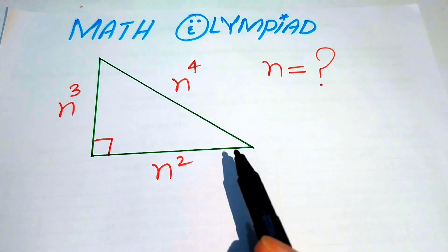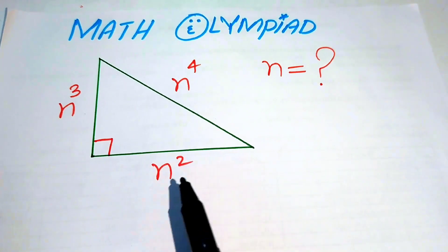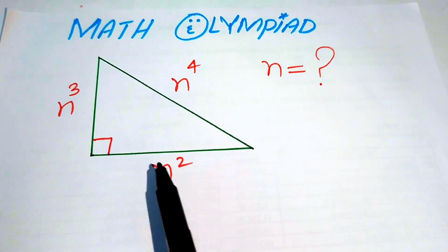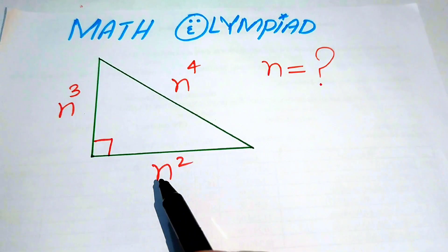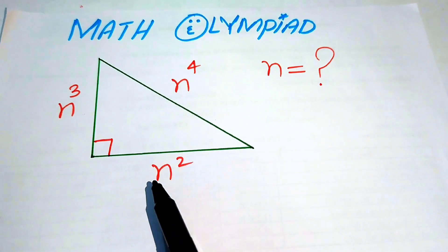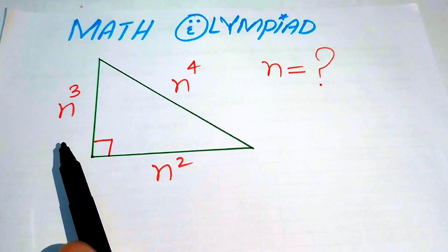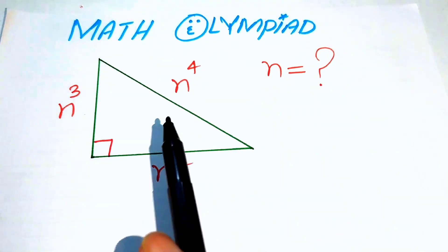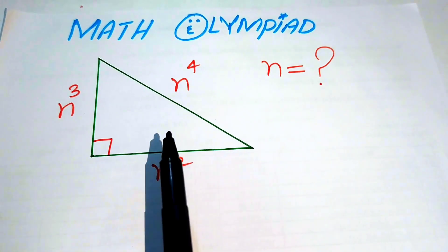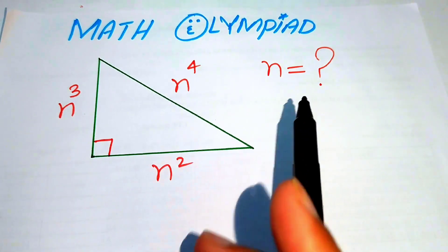Hello everyone, welcome. We will solve this Math Olympiad geometry problem. We have a right triangle in which the lengths of its three sides are n squared, n cubed, and n to the power of 4 respectively. In this problem we find the value of n.